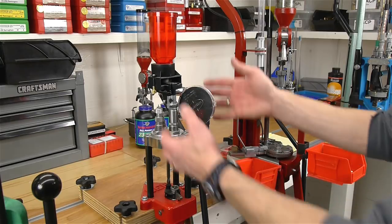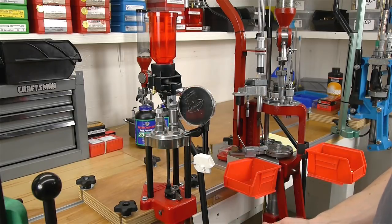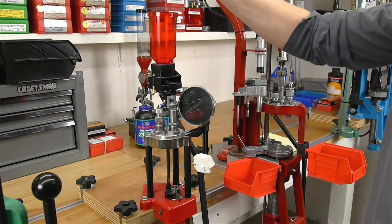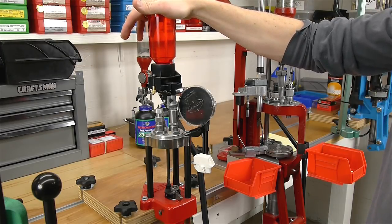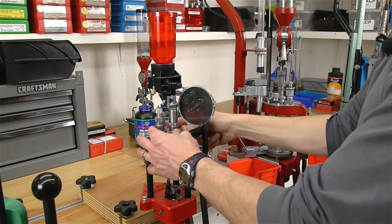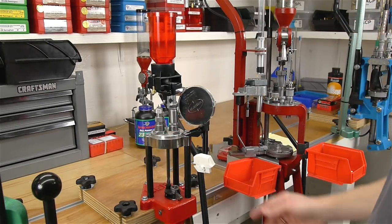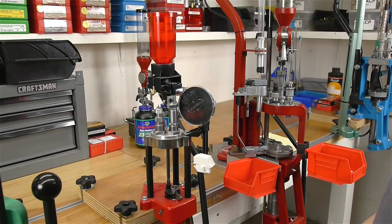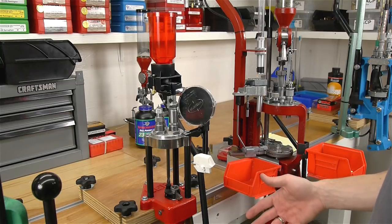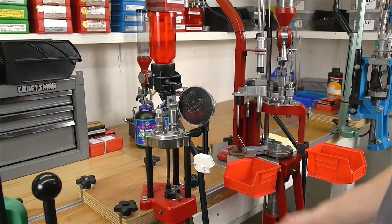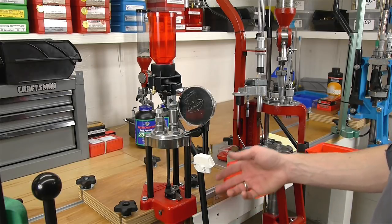We can even use a powder measure with this setup. So we're only going to do one operation per pull of the handle, but we can easily do powder charging with the powder measure on this particular press and we can keep multiple dies set up on a tool head. So this is a press that you can load accurate rifle ammunition with. You can also load pistol ammo. Just note that it's going to take three or four pulls of the handle per cartridge to load that ammunition.